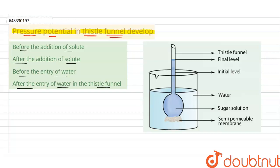The main first point we have to understand is that in this experiment, options 'before addition of solute' and 'after addition of solute' are not applicable. In the thistle cell funnel experiment, there is a thistle cell funnel inside a beaker. The beaker has water and the thistle cell funnel has sugar solution. There is a semi-permeable membrane, and water flows into the sugar solution through this semi-permeable membrane.